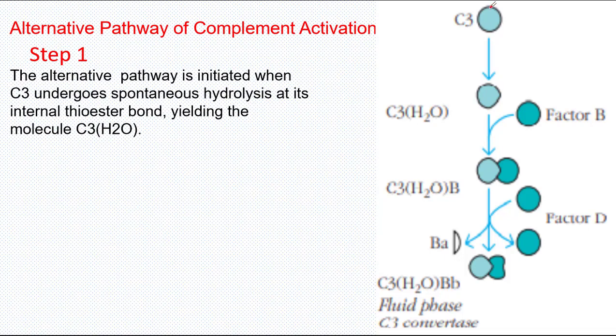Alternative Pathway of the Complement System is activated when C3 component, which is present in higher concentration in the blood, undergoes spontaneous hydrolysis and forms a molecule of C3H2O.